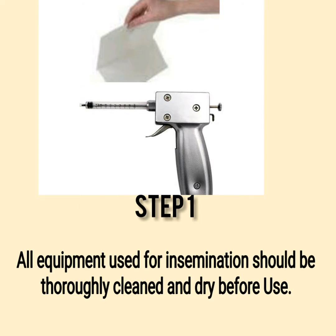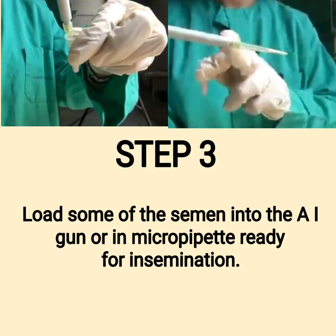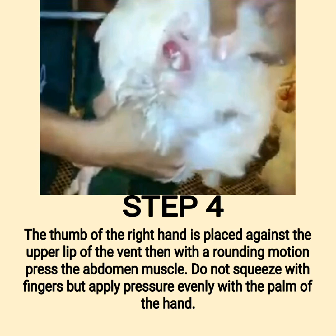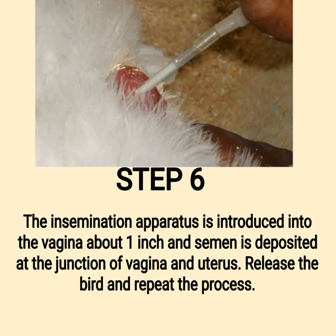Step 1: All equipment used for insemination should be thoroughly cleaned and dry before use. Step 2: The bird is held by the legs with the left hand down and tail tucked back and against the operator's chest. Step 3: Load some of the semen into the AI gun or micropipette ready for insemination. Step 4: The thumb of the right hand is placed against the upper lip of the vent, then with a rounding motion press the abdominal muscle — do not squeeze with fingers but apply pressure evenly with the palm of the hand. Step 5: When the oviduct is everted, the second operator inserts the syringe into the oviduct as far as it will go without exerting pressure.